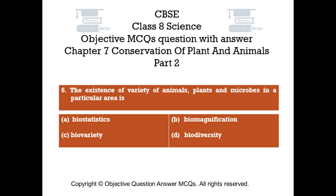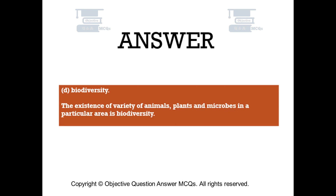Question number 6. The existence of variety of animals, plants, and microbes in a particular area is: Option A Biostatistics, Option B Bio-Magnification, Option C Bio-Variety, Option D Biodiversity. The right answer is Option D — Biodiversity. The existence of variety of animals, plants, and microbes in a particular area is biodiversity.